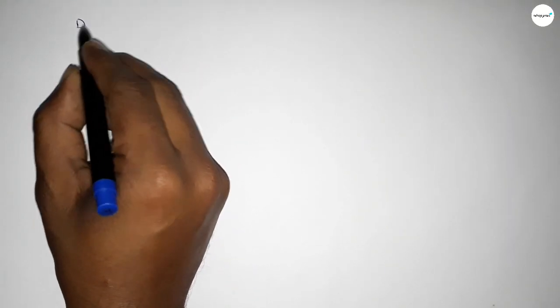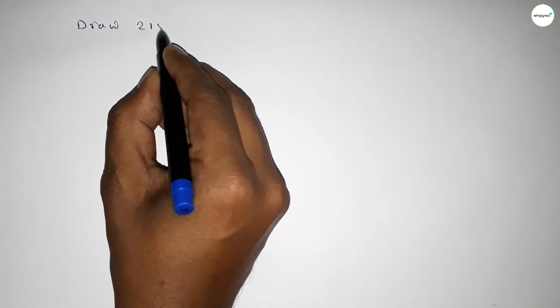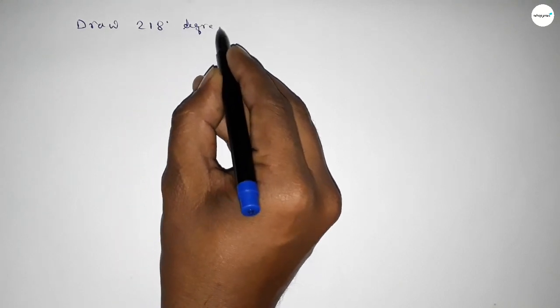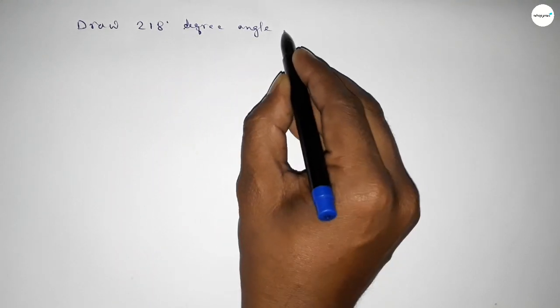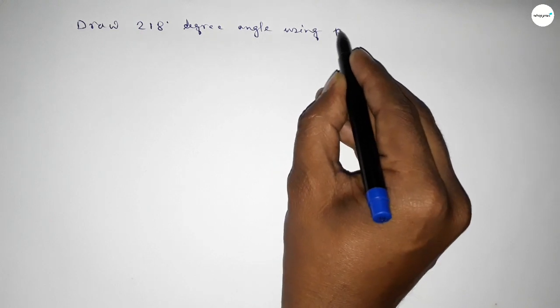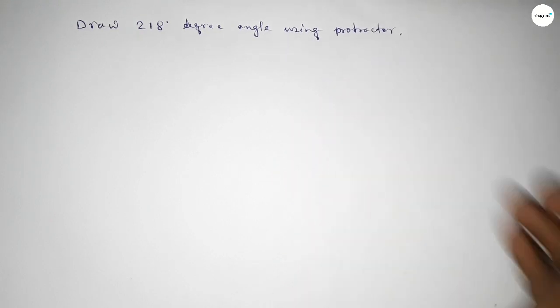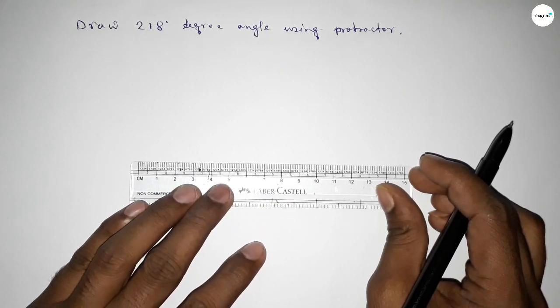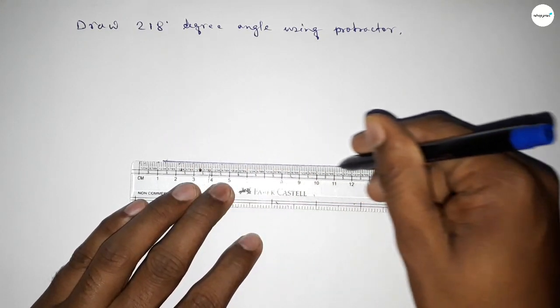Hi everyone, welcome to SSR classes. Today in this video we have to draw a 218 degree angle by using a protractor. So let's start the video. First of all, we have to draw here a straight line of any length.